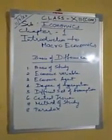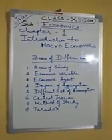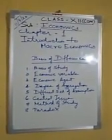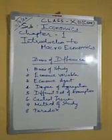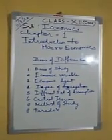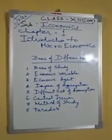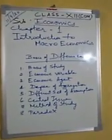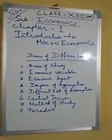The second basis is economic variables. Microeconomics uses micro economic variables such as consumer demand or producer supply. On the other hand, macroeconomics uses macro variables such as aggregate demand and aggregate supply.